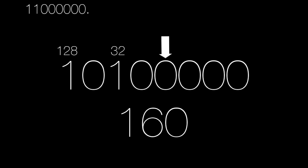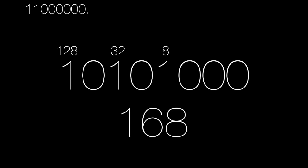For our second octet we have 168. To start, we turn on the first bit: 128. If we also turn on the second bit, the 64, our value is too high at 192 again — so we leave that one off. Turning on the next one, the 32: 128 plus 32 equals 160. The fifth bit represents 8, so we turn that on too. 128 plus 32 plus 8 equals 168 — second octet complete!